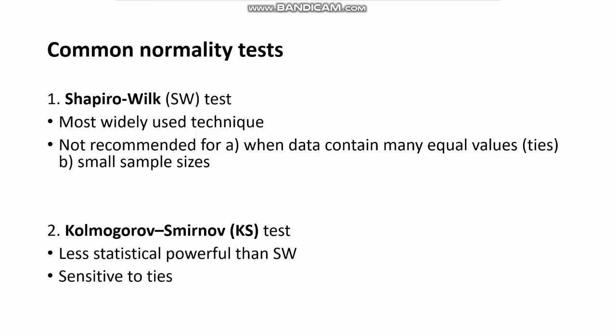The most commonly used normality tests are the Shapiro-Wilk test and the Kolmogorov-Smirnov test. The Shapiro-Wilk test is commonly used for continuous data; however, it has limitations when the data contain many equal values (ties) or when the sample size is very small. The Kolmogorov-Smirnov test, or KS test, is also used for continuous data, but most statisticians believe it has less statistical power than the Shapiro-Wilk test.